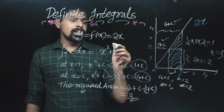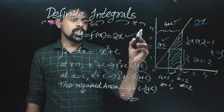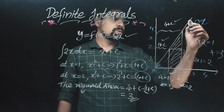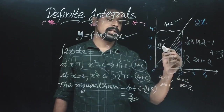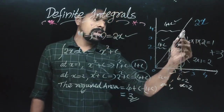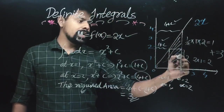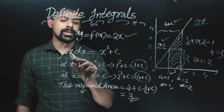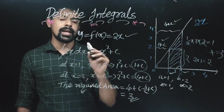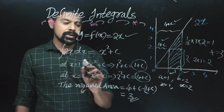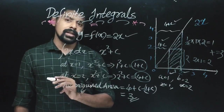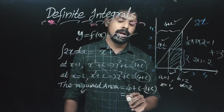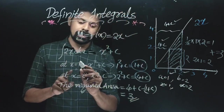I'm going to explain this. We have a function y = 2x. We have a graph of 2x. We have this area under this line. If you have an indefinite integral, we have x-squared as the integration of 2x. When x equals a point, or x equals 1, we have area 3.